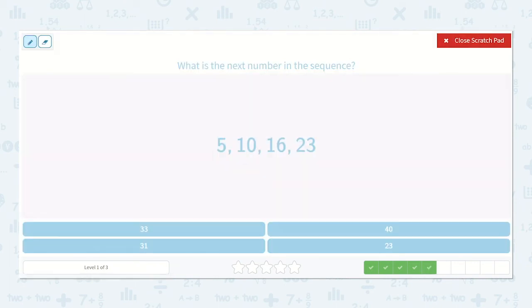Here we have 5, 10, 16, 23. Well, 5 plus 5 is 10. Now here my ones place is going up by 6, so I know I'm adding 6 ones. So plus 5, plus 6. Now 16 plus 7 is 23. So we have plus 5, plus 6, plus 7 next would be plus 8. I know 23 plus 7 is 30, so 23 plus 8 is 31.